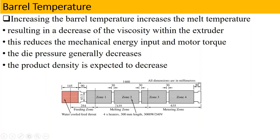What will happen? The mechanical energy input required by the motor will be less. In the metering zone, the die pressure will also decrease. The density of the product will also be affected. In summary, as the barrel temperature increases, the melting zone temperature also increases, viscosity decreases, mechanical energy is reduced, die pressure decreases, and product density changes.